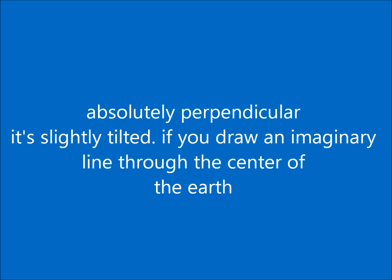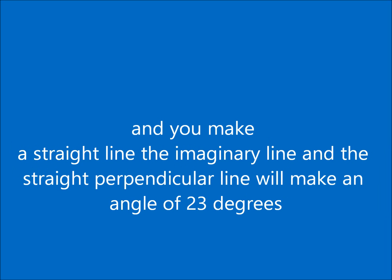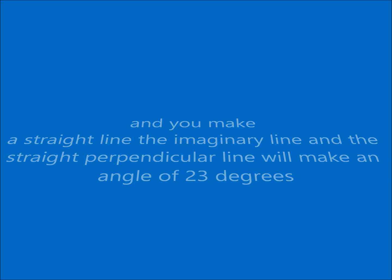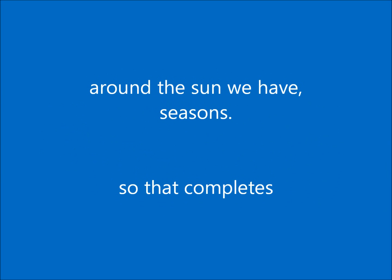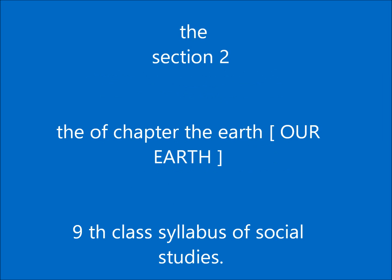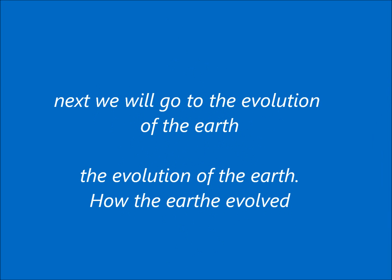Two factors cause seasons: first, the tilt of the earth — the earth is not absolutely perpendicular but slightly tilted. If you draw an imaginary line through the center of the earth, it makes an angle of 23 degrees with the perpendicular straight line, and that is the meaning of tilt. Because of the tilt and because of the revolution around the sun, we have seasons. That completes section two of the chapter on Earth for the ninth class social studies syllabus. Next, we will go to the evolution of the earth.